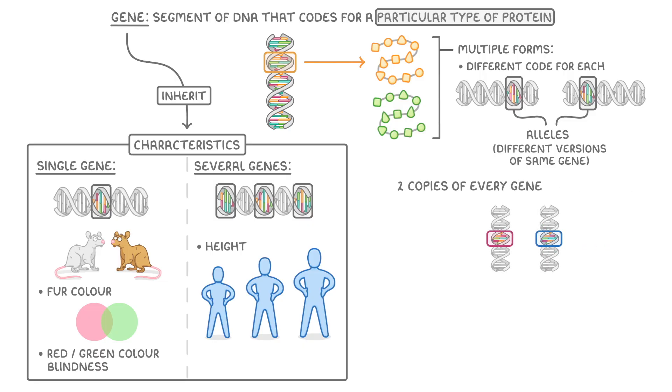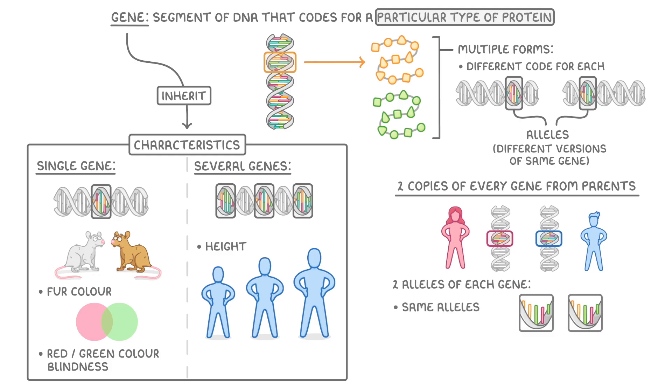Because we have two copies of every gene, one from each of our parents, it means that we'll have two alleles of each gene. And these could both be the same allele, or they could be two different alleles. If they were the same, we'd say that we're homozygous for that allele, whereas if they were different, we'd be heterozygous.